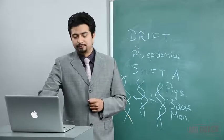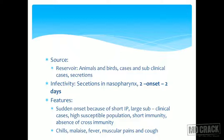Features of influenza include sudden onset due to a short incubation period, a large subclinical portion, high susceptible population, short immunity, and absence of cross-immunity. Basically, there is a very congenial atmosphere for disease outburst — no immunity means the disease simply bursts out and spreads very fast.